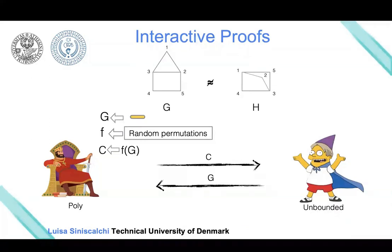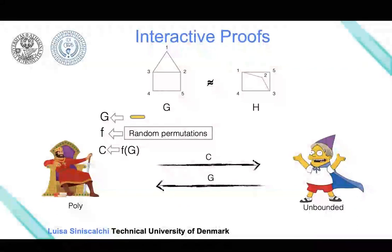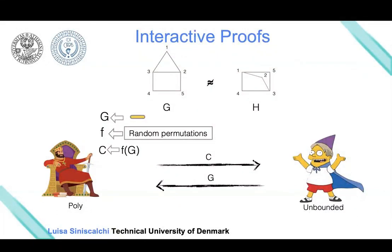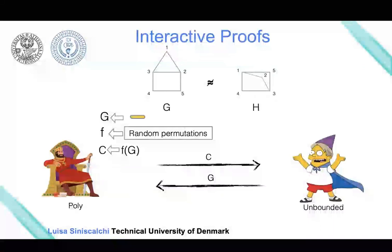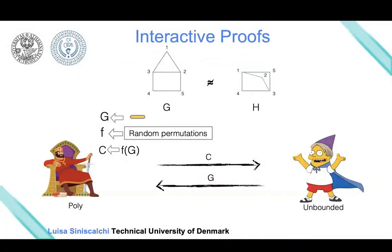Let's see why this protocol has the properties we've been discussing. In particular, if the statement holds—the two graphs are not isomorphic—then the prover always manages to convince the verifier. This is the case because the graphs are not isomorphic, so the prover, running in exponential time, can always determine which of the two graphs the verifier applied the permutation to. So he always sends back the correct answer.